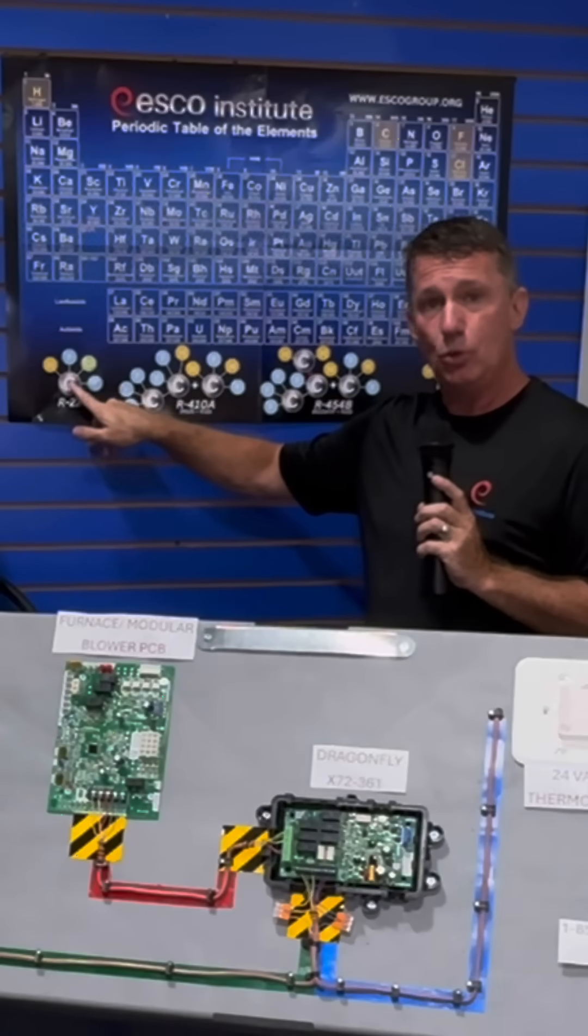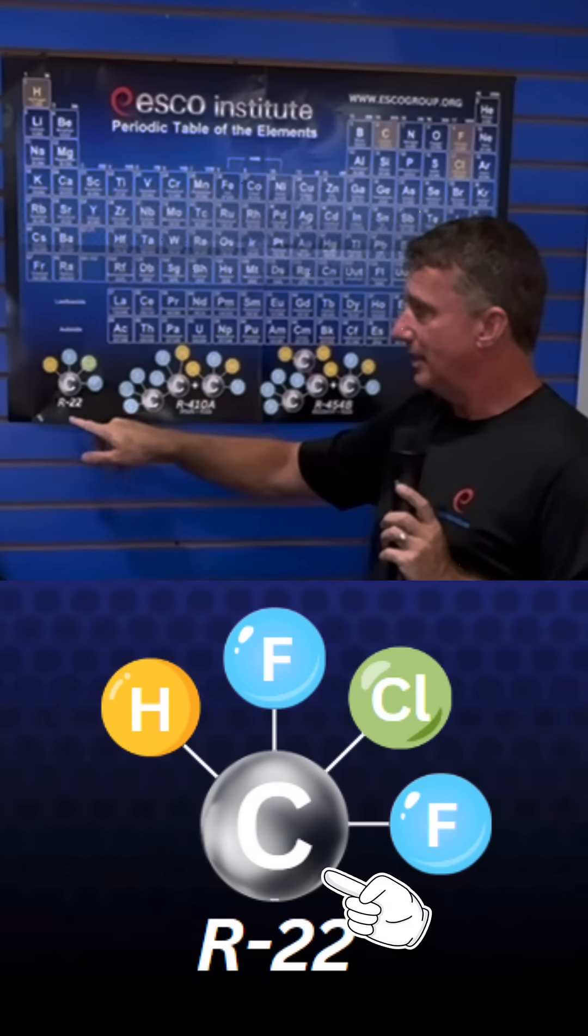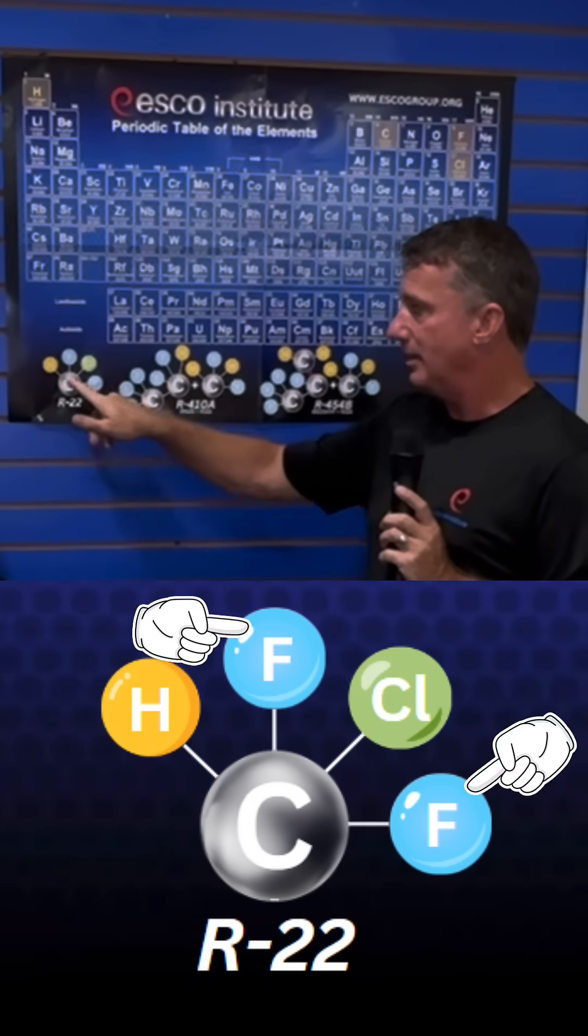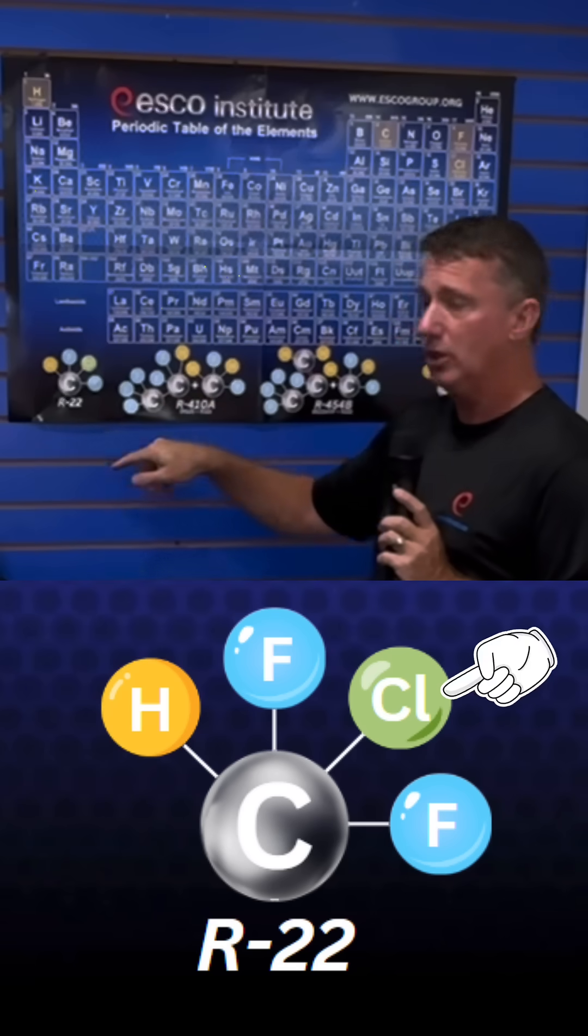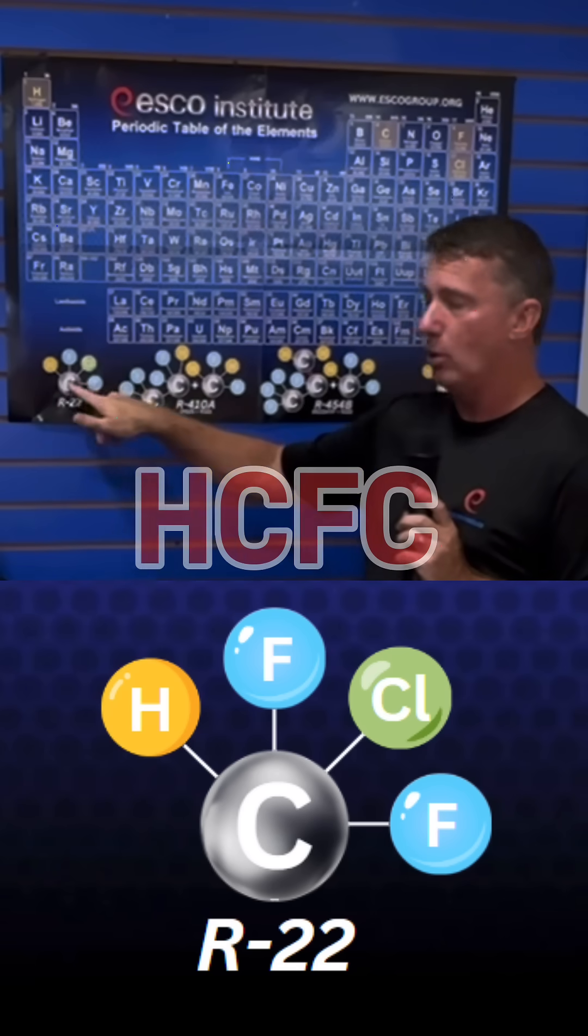If we look at our R22 molecule, we have a carbon atom at the center, two fluorine atoms, one hydrogen, and one chlorine—hydrochlorofluorocarbon.